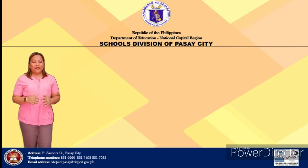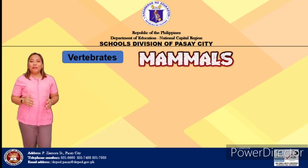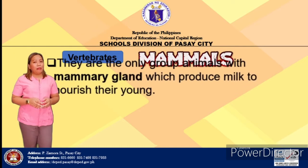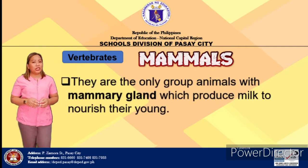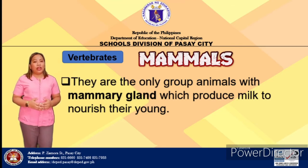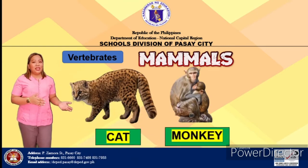The last classification of vertebrates are mammals. The term mammal came from the Greek word mama, which means breast. They are the only group of animals with mammary glands, which produce milk to nourish their young. Mammals are warm-blooded animals just like birds. They have hairy bodies, and mother mammals retain their young in their bodies until they are ready to be born. Examples are cat, monkey, and human.